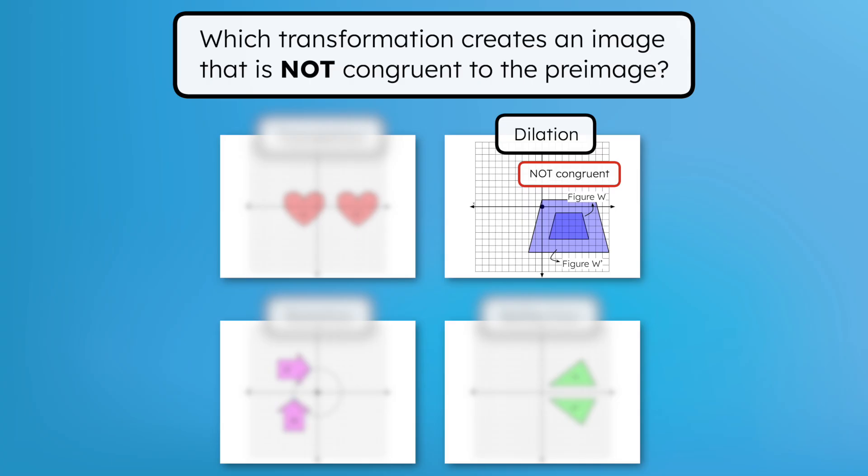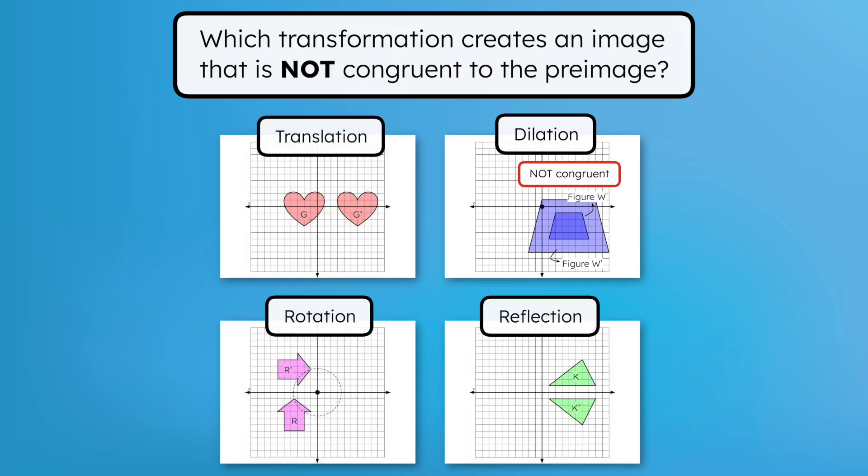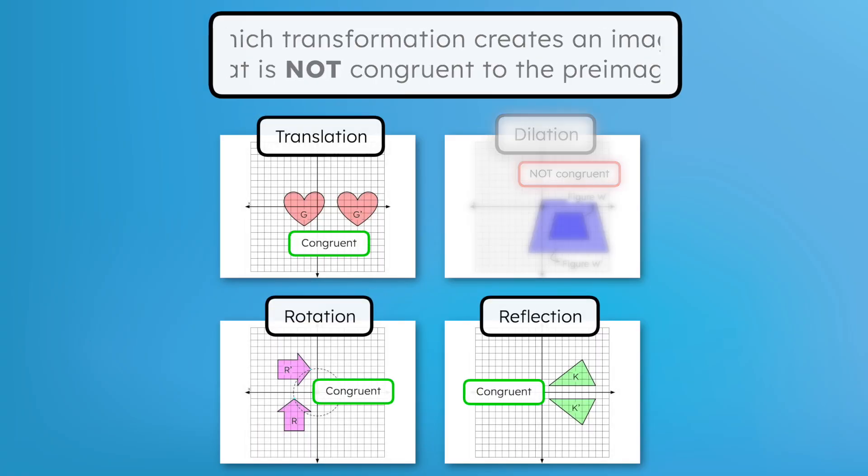Whereas in the other three transformations, the images are the same shape and size as their pre-images, meaning they are congruent. That makes sense since we're just sliding, flipping, or turning the pre-image from one place to another. The orientation of the image may change, but the image is still congruent to the pre-image.